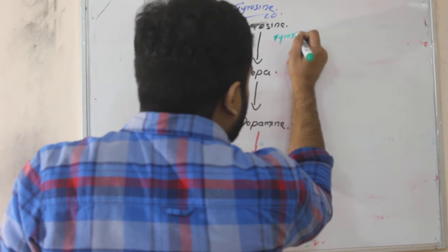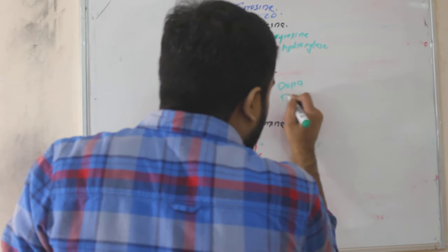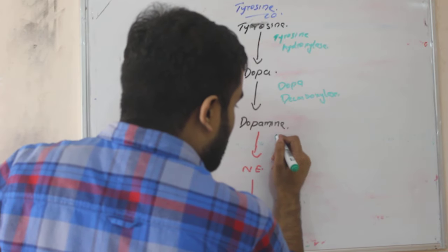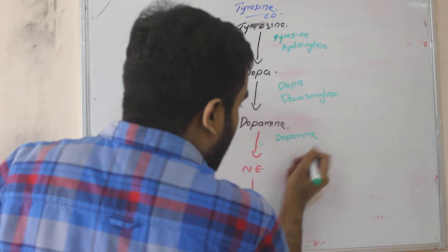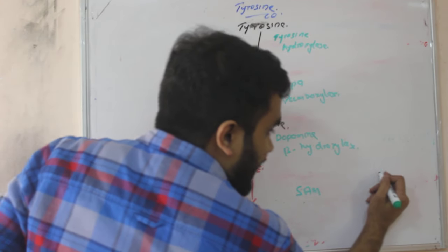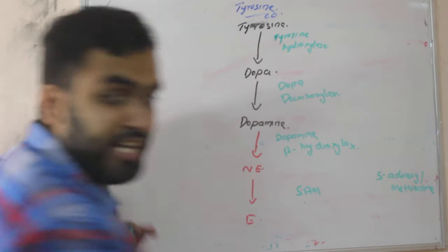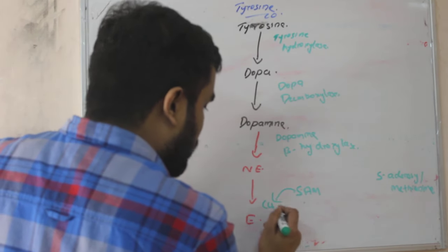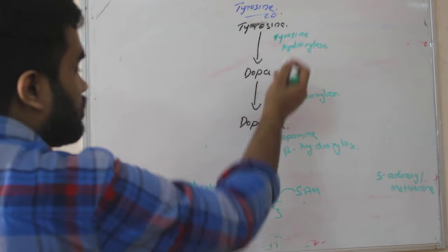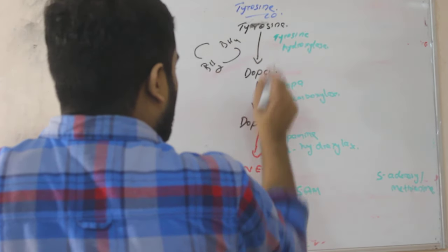We have different enzymes in each location. The enzyme here is tyrosine hydroxylase. Here the enzyme is DOPA decarboxylase. Here the enzyme is dopamine beta hydroxylase. Here simply SAM, SAM means S-adenosyl methionine. S-adenosyl methionine is donating a methyl group, that is known as methylation. So methylation of norepinephrine gives what? Epinephrine. Now tyrosine hydroxylase, the coenzyme is again our BH4, BH2. This BH2 reductase will be here.